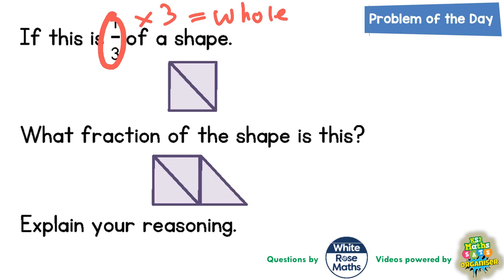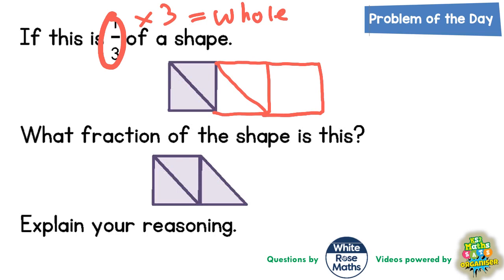One thing we could do is actually just draw it. So if this is one third, then we could draw the next third on the end of it, which would look exactly the same, and another third on the end of that, which would look exactly the same.